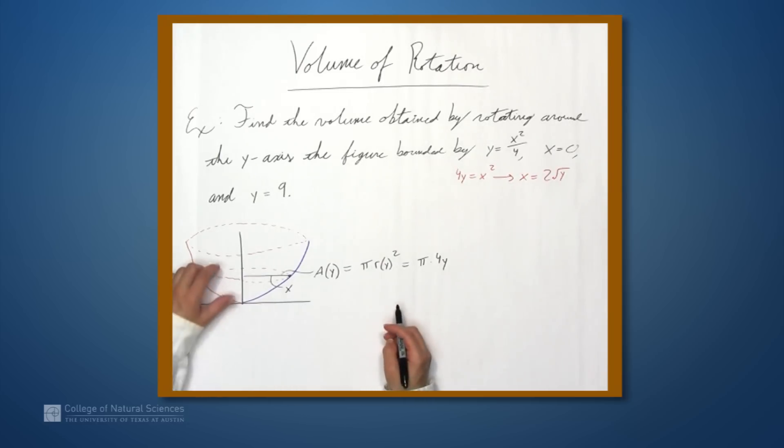Now we also have to figure out our limits of integration. And we're rotating around the y-axis. So our area function is in terms of y, and we're going to be integrating in terms of y. This y equals 9 tells us the upper limit of integration. And since we're starting at x equals 0, which is the y-axis, we're starting at this point, which is also y equals 0.